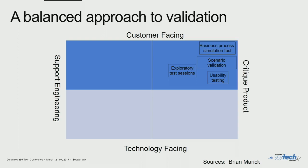In the upper-right quadrant — customer-facing and critiquing the product — you're focused on meeting business and user requirements. Exploratory test sessions are important here; that's a technique to discover bugs, not a regression technique. You're going to find a lot more bugs through exploratory testing than through regression testing, and the best way to do this is with humans, since humans see a lot more than a machine ever will. Going to the other extreme — supporting engineering and technology-facing — you're really talking about unit and component tests. This is where automation needs to happen; it's the top priority from an automation perspective.